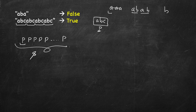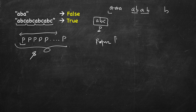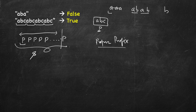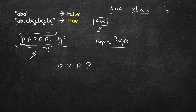If you have studied the KMP algorithm — for which I have already added a video — we used to find the longest prefix which is also a suffix. By prefix we mean proper prefix, because the string itself is also a prefix. So we exclude the complete string. The prefix starts from the beginning, and if you exclude the last p, part of the string will match the suffix.